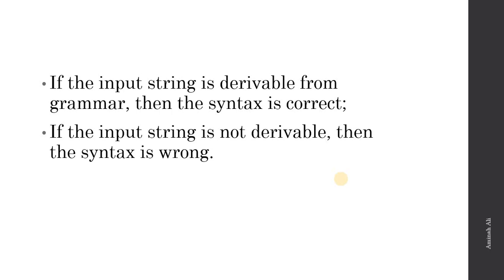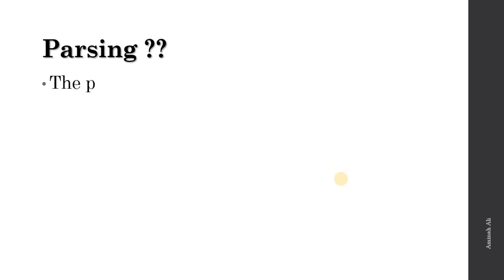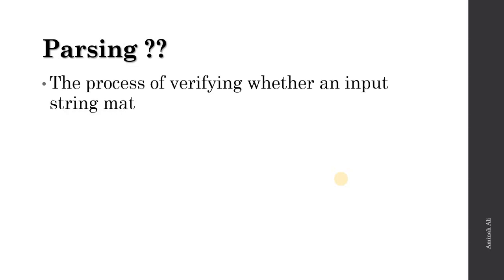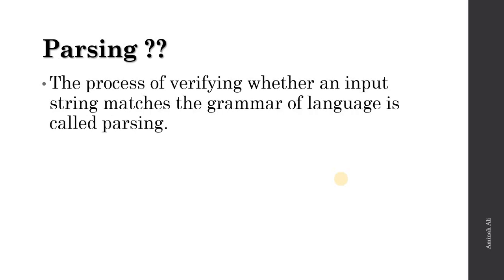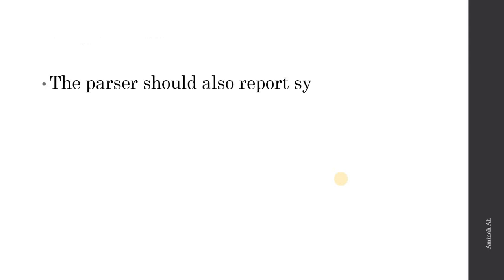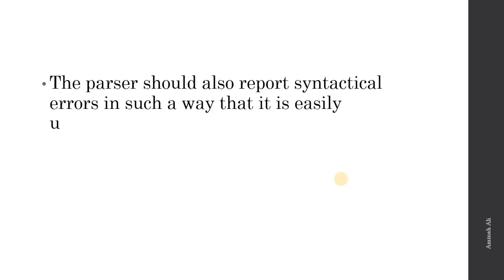The process of verifying whether an input string matches the grammar of the language is called parsing. Parsing is the actual matching process — we have a grammar, we have a list of tokens from the source program written in a specific language, and we match those tokens against the grammar. The parser should also report syntactical errors in a way that is easily understood by the user.